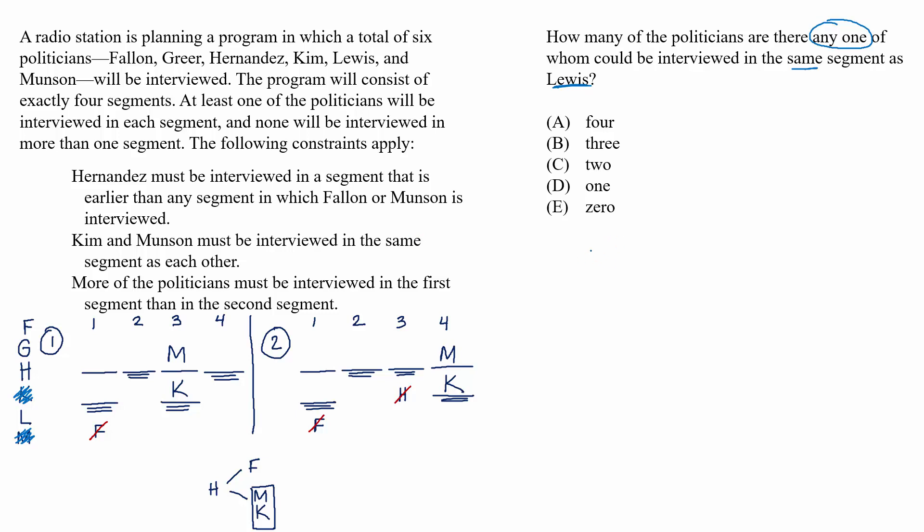Outside of Munson and Kim, who can't be with Lewis because they are their own pair, the politicians left over are Fallon, Greer, and Hernandez. So let's see how many of those three could be in segment one.